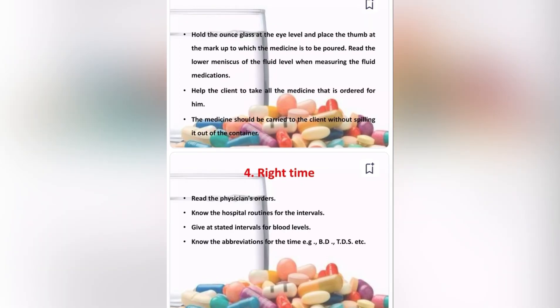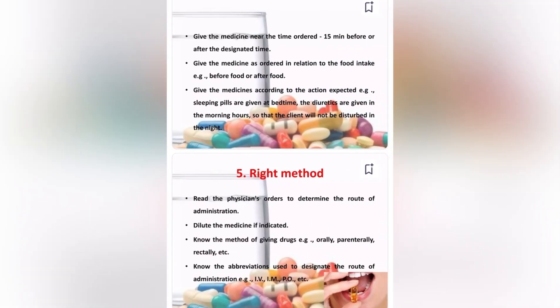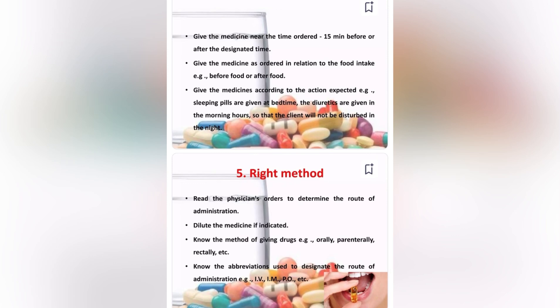Right time: Read the physician's orders and know the hospital routine for dosing intervals. Give medication at stated intervals to maintain appropriate blood levels. Know the abbreviations for timing, such as BD, TDS, etc. Give the medication within 15 minutes before or after the designated time. Give the medication as ordered in relation to food intake, for example, before food or after food.